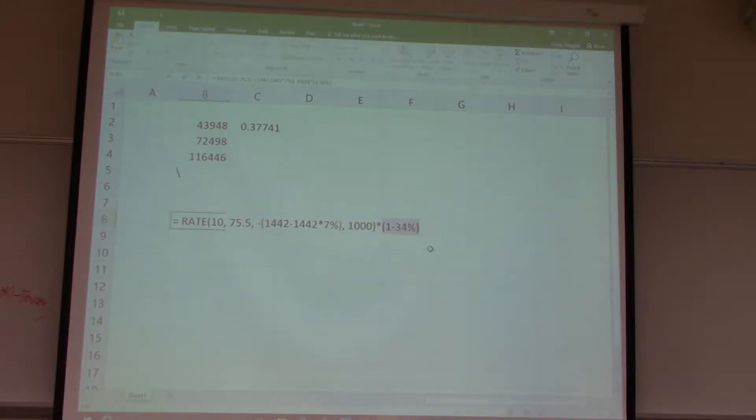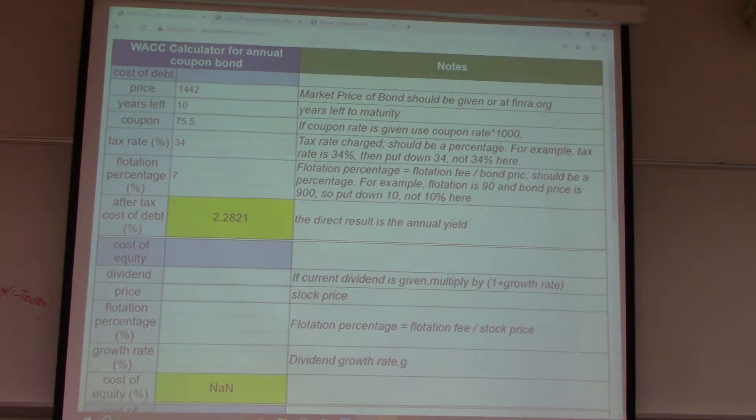It's called tax shield, or tax benefit of interest. So, the firm should be using more debt because it will reduce the amount of tax they pay because of the interest benefit of tax. It's tax deductible. So, 2.28%. Now, the last thing we need to know, KE, cost of equity.